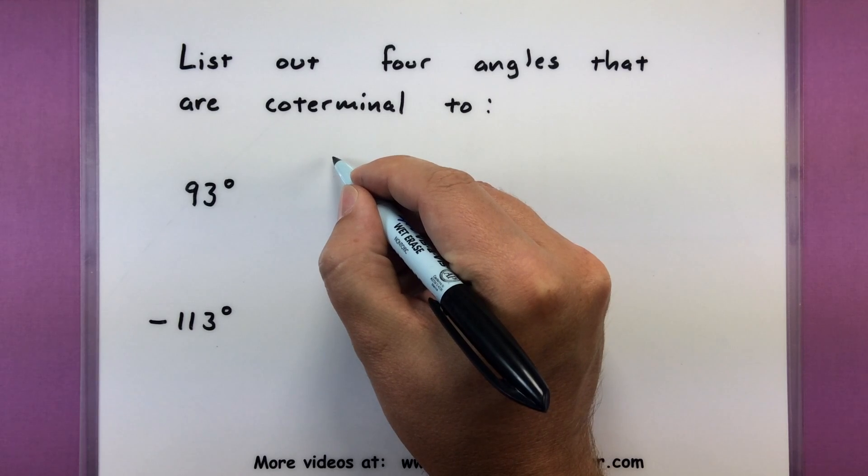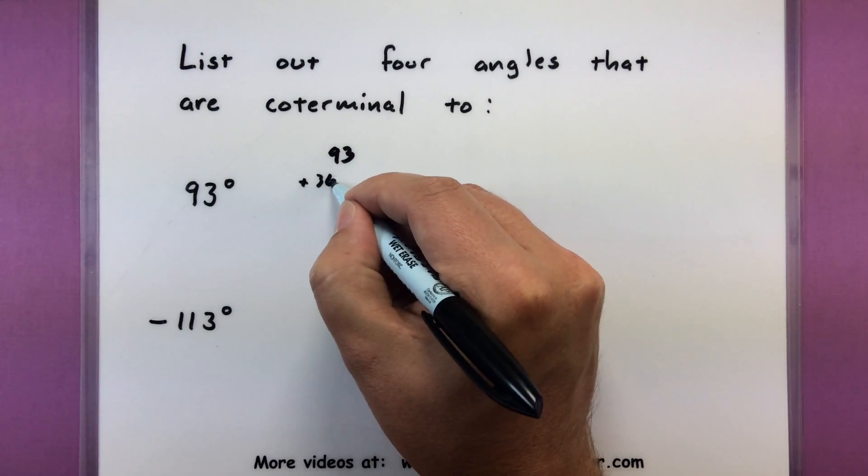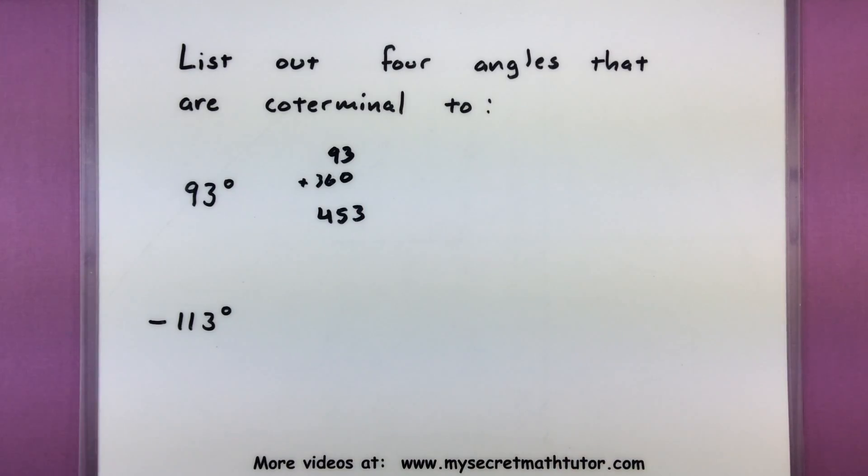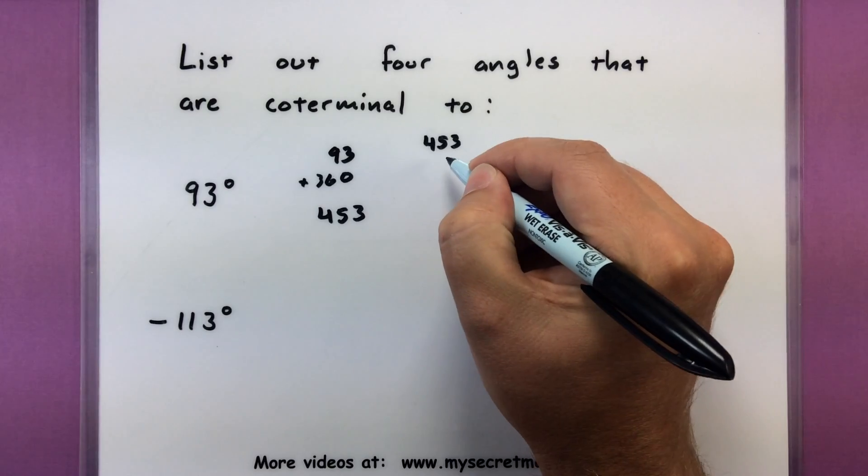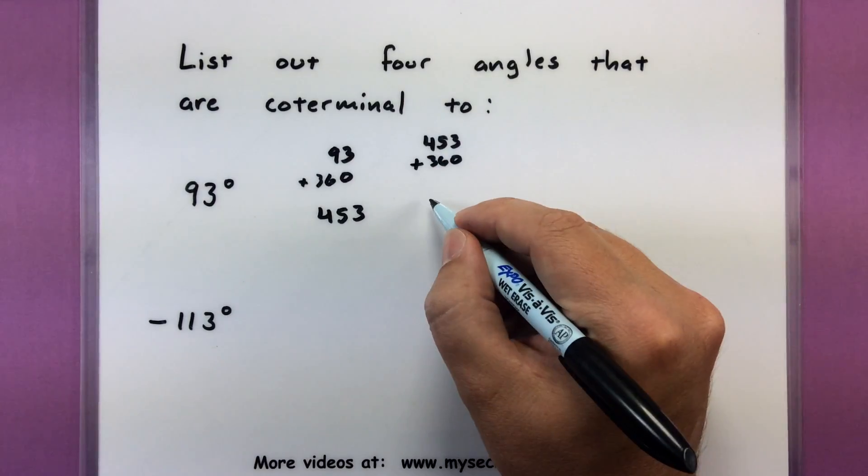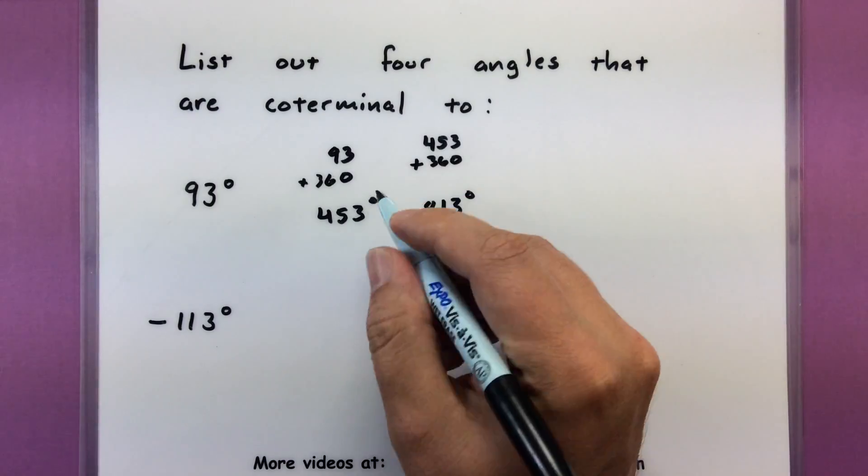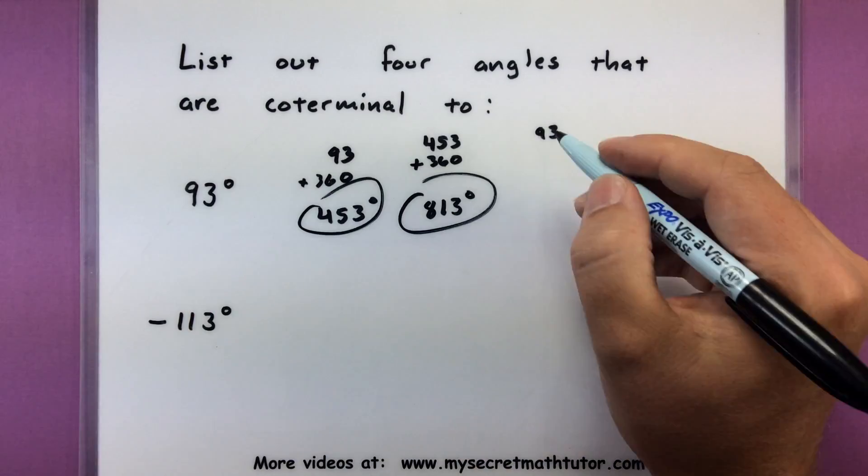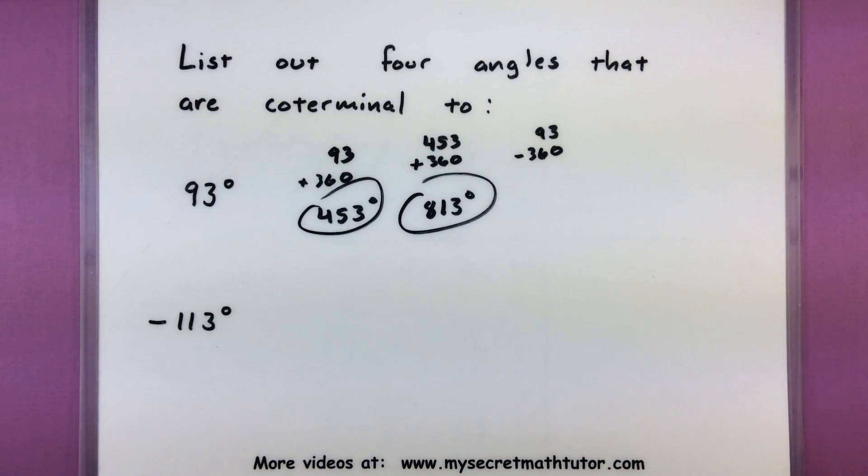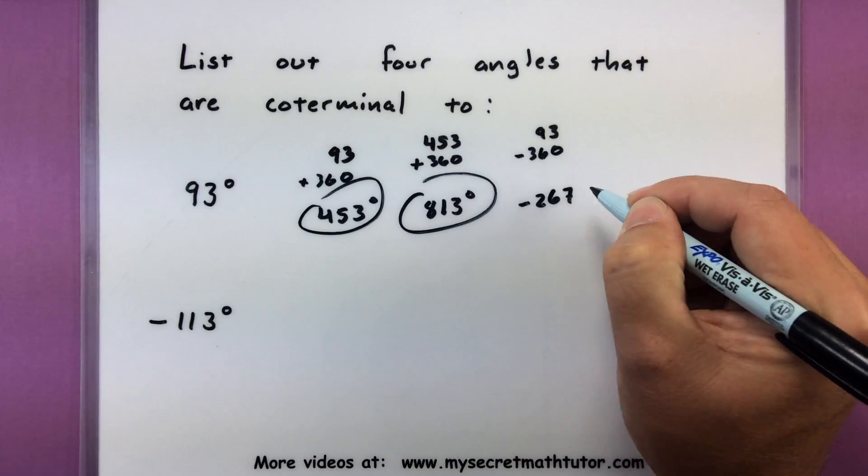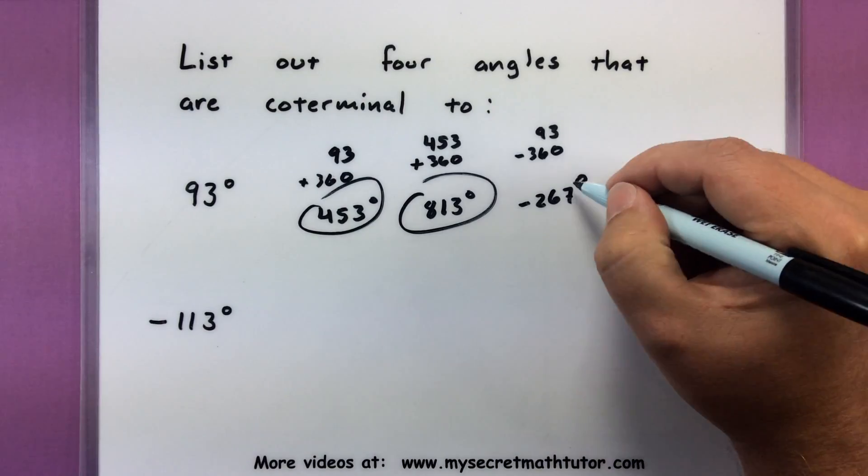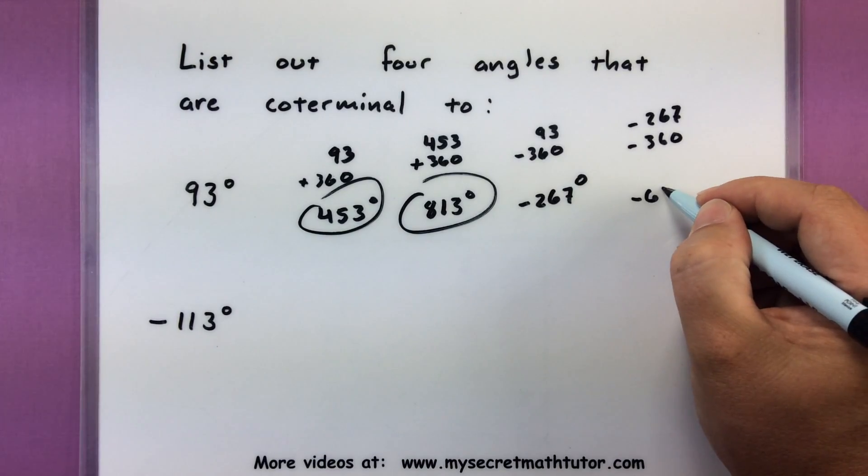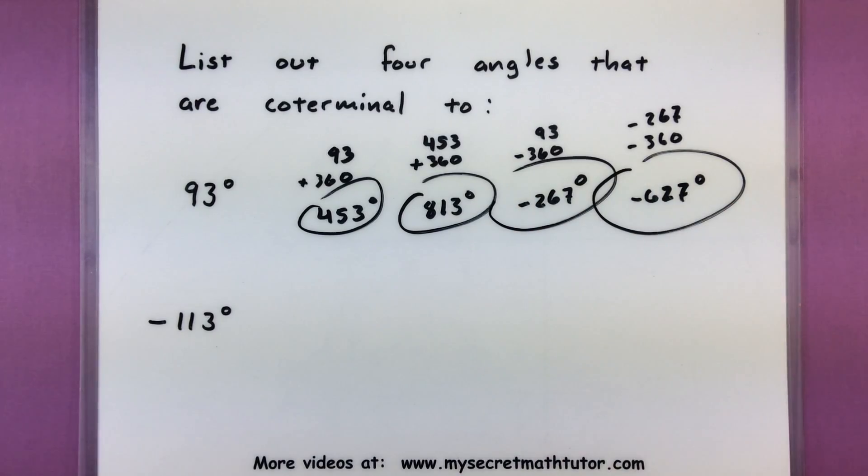So I'm going to start off with my 93, and I'm going to add 360 to this guy. When I do that I get 453, so I will call that my first coterminal angle. Now I can take that one and add another 360 degrees. This will give me 813. So right there I have two positive coterminal angles. Let's find two more by starting with our original and now subtracting 360 degrees. If I subtract I get negative 267, so there's one coterminal angle. And let's take this guy and subtract another 360 degrees, that'll give us negative 627. So now I have two negative coterminal angles as well.